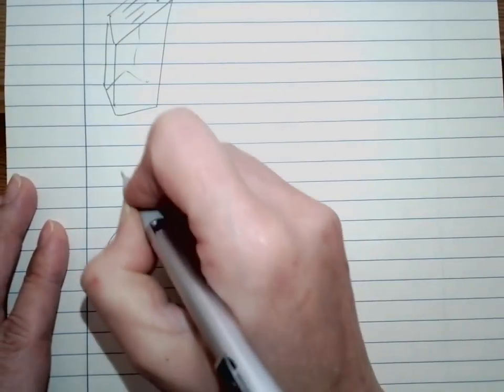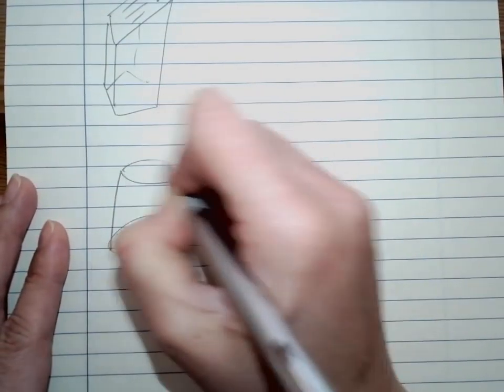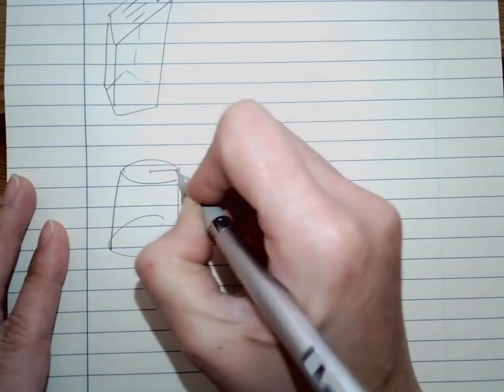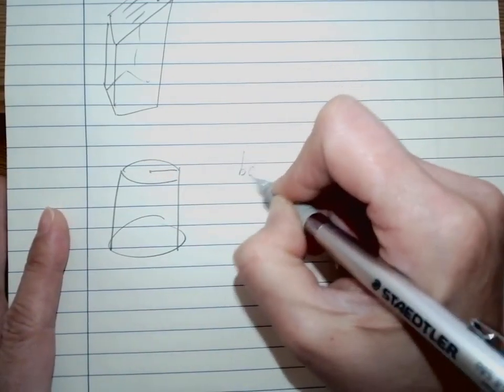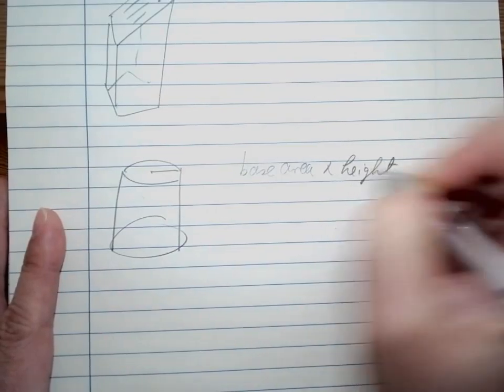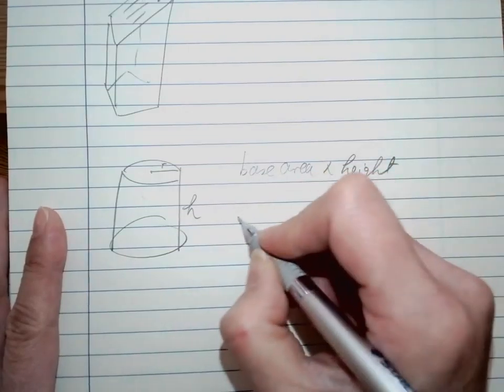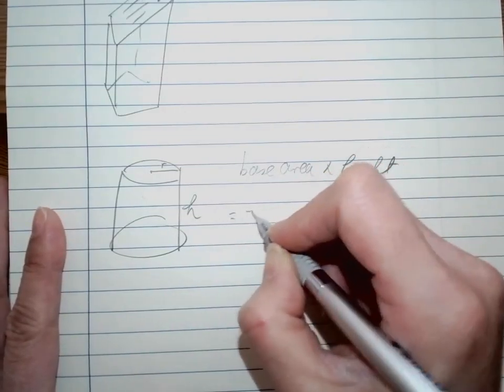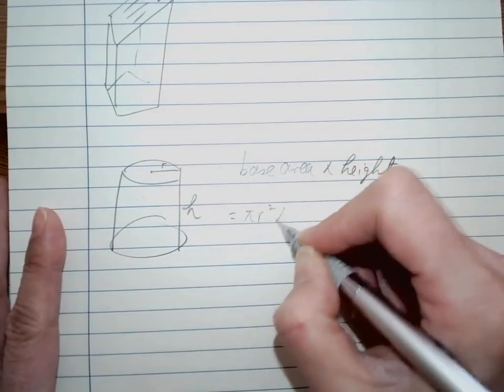If we have a cylinder here, it's still the base area times the height. But because the base area is a circle, we can in general simplify into pi r squared times height.